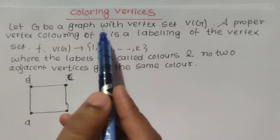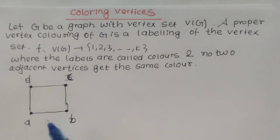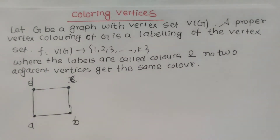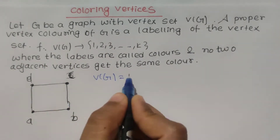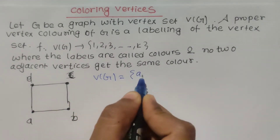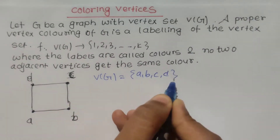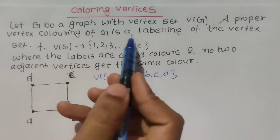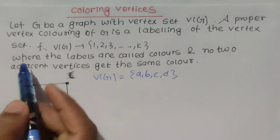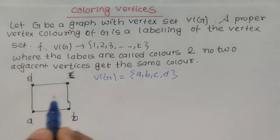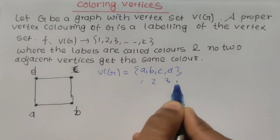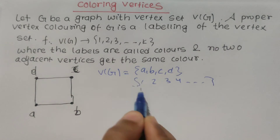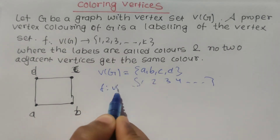Let G be a graph with vertex set V. The vertex set is V, and G has vertices A, B, C, D. A proper vertex coloring of G is the labeling of the vertices — here, A gets label 1, B gets label 2, C gets label 3, D gets label 4. This is what we call coloring.